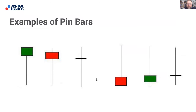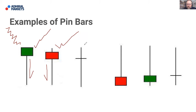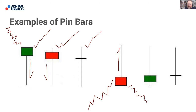Here are some examples of pin bars. Remember, they are reversal patterns. When we have a wick pointing down after price has been trading down, we'd be expecting the directional bias to be to the bullish, upside. On the flip side, when we see wicks pointing up after price has been moving upwards, price is likely to roll over and fall away for the next session or so. They show up across all instruments and all timeframes, but the higher the timeframe, the more validity any particular candlestick has. A one-minute pin bar does not have the same value as a monthly pin bar.